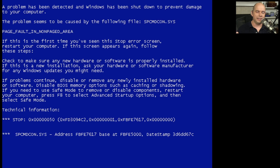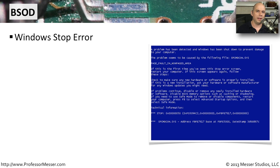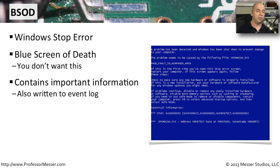One thing we hate to see is the blue screen — the Windows stop error, or what we call the blue screen of death. That BSOD is one that really stops everything in its tracks, requiring a reboot to get things running again. There's some information on this screen that can be very important, and most of this information is written into a log. So you should be able to go back to your event viewer to determine what happened. Sometimes we're not there when a blue screen occurs, so we can go back to the event viewer and see exactly what occurred and what those error messages were.